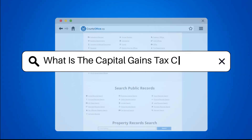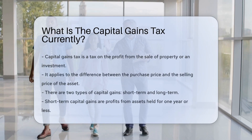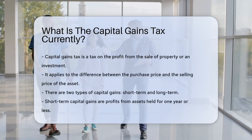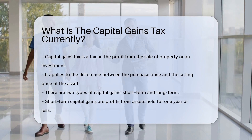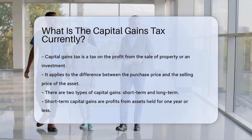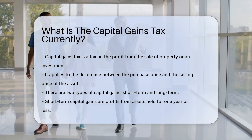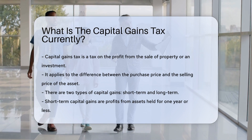What is the capital gains tax? Capital gains tax is a tax on the profit from the sale of property or an investment. It applies to the difference between the purchase price and the selling price of the asset.